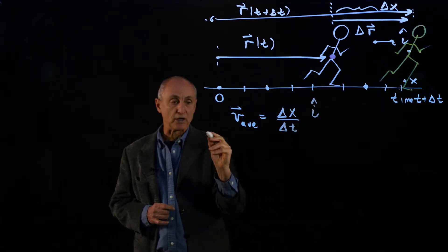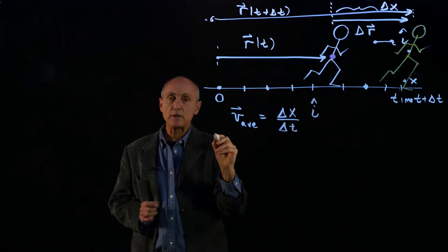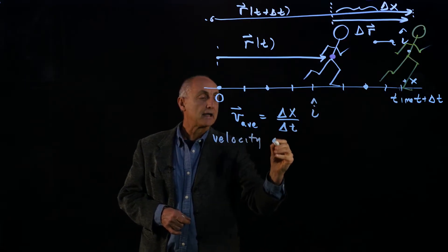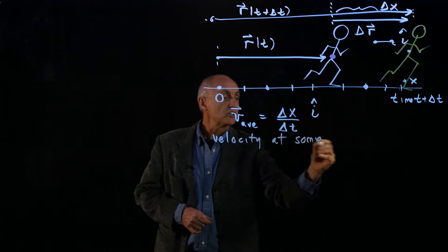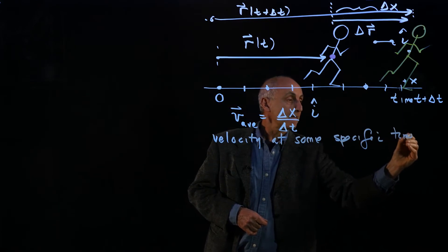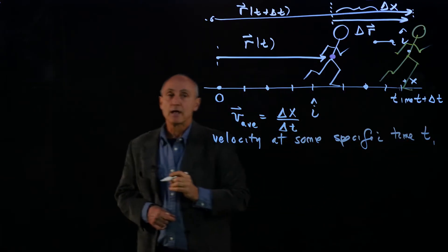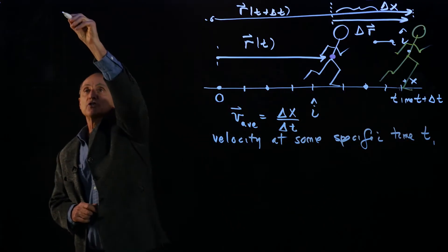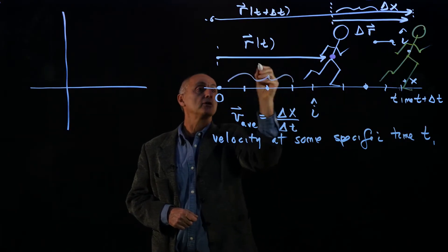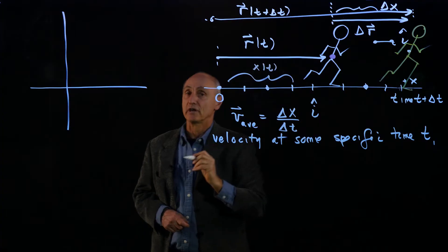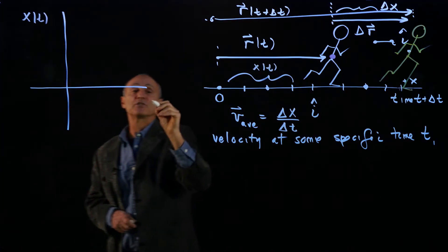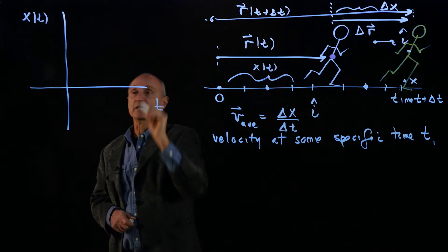Now what we'd like to ask is a separate question. What do we mean by the velocity at some specific time t1? Now in order to understand that, let's just make a plot of the position function. So remember we called the component of the position function x of t.